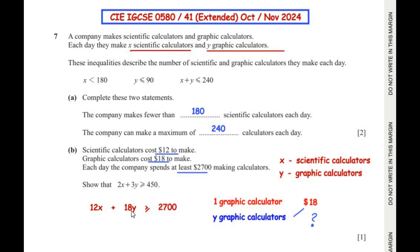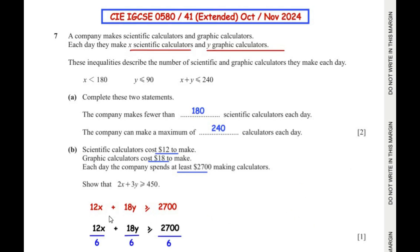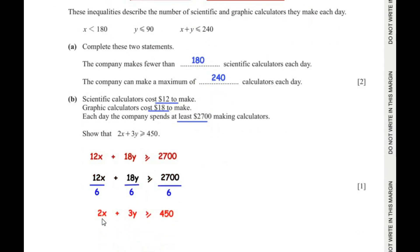Since 12, 18, and 2700 are all divisible by 6, we simplify: dividing both sides by 6 gives 2x + 3y ≥ 450. This shows that 2x + 3y is greater than or equal to 450.